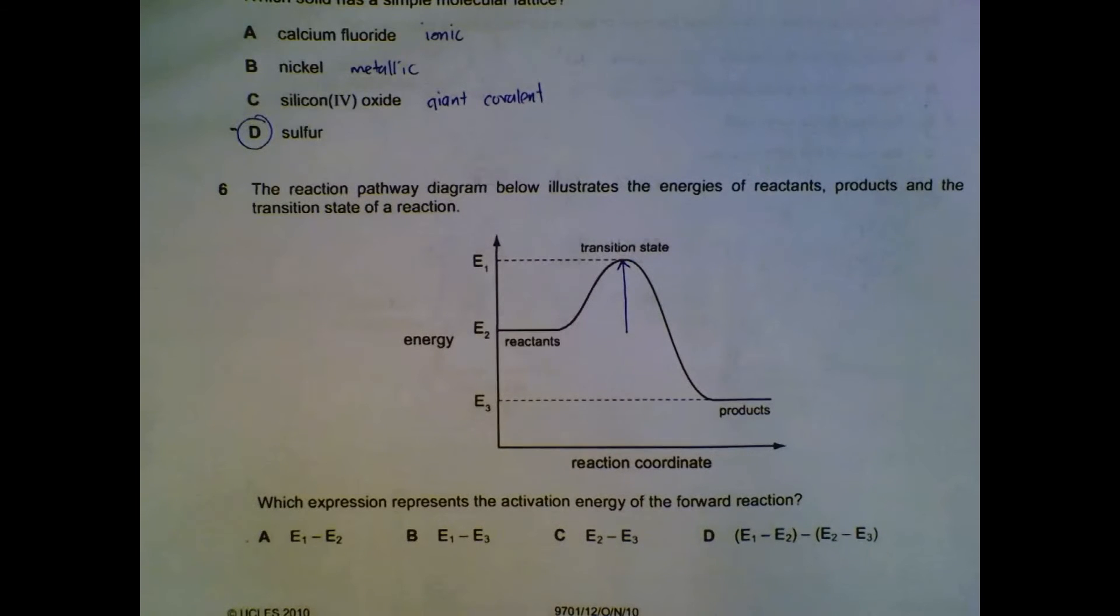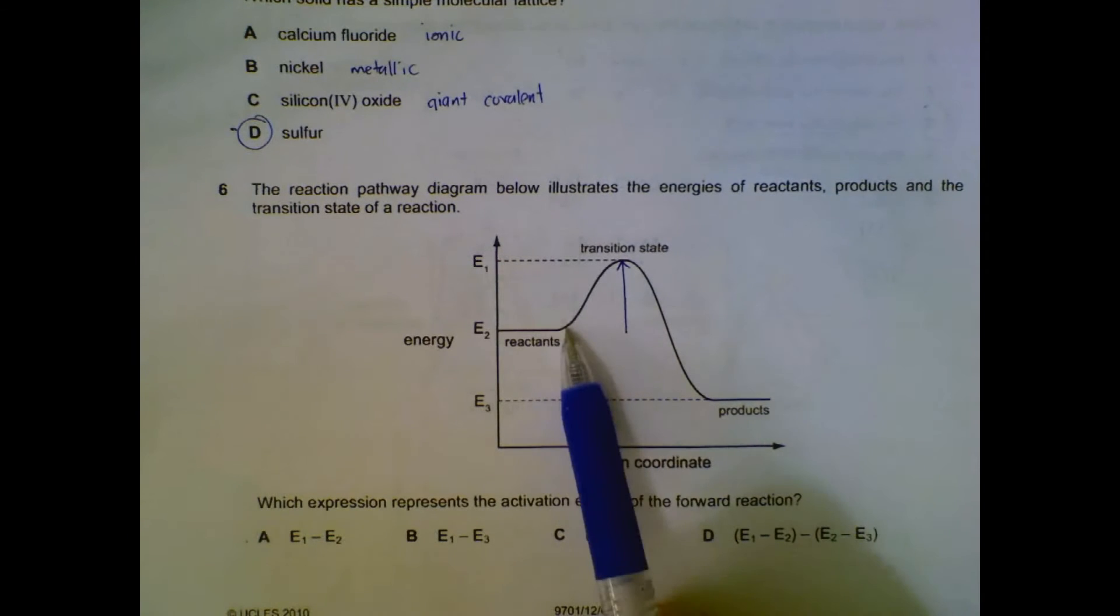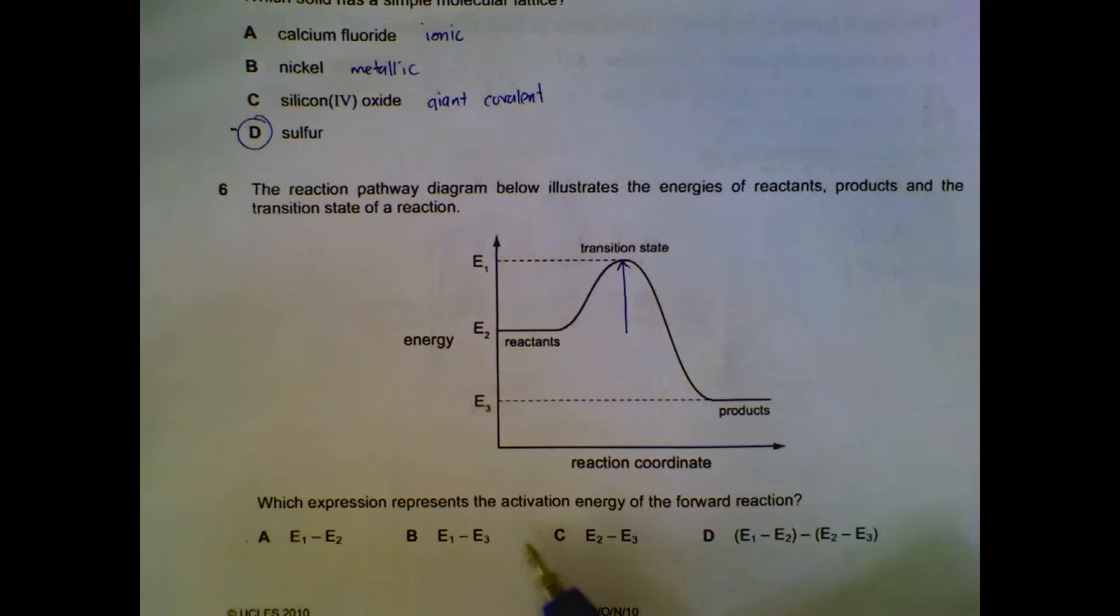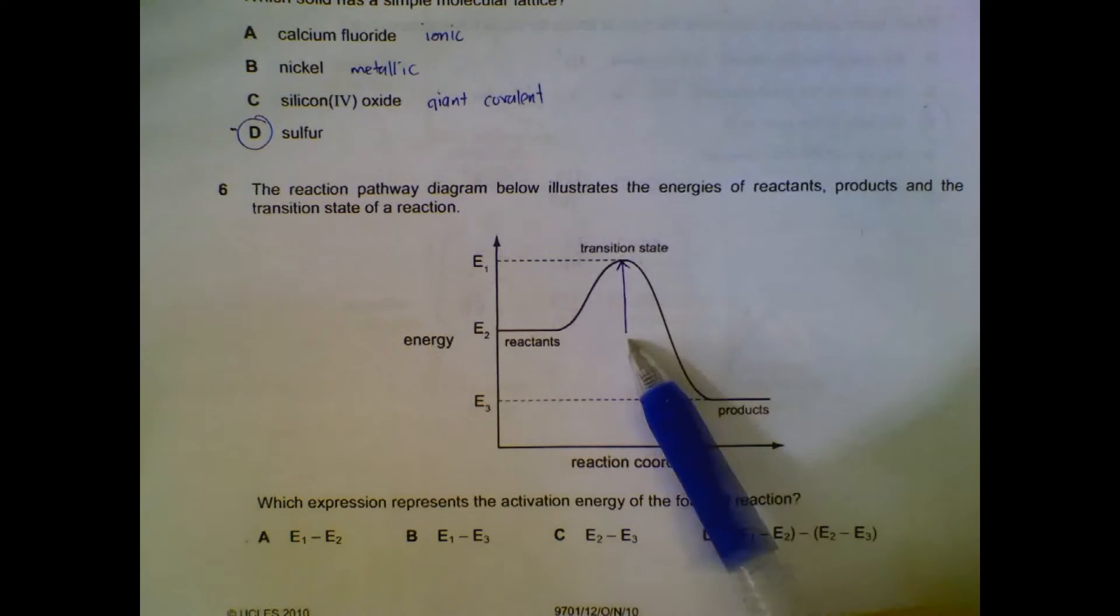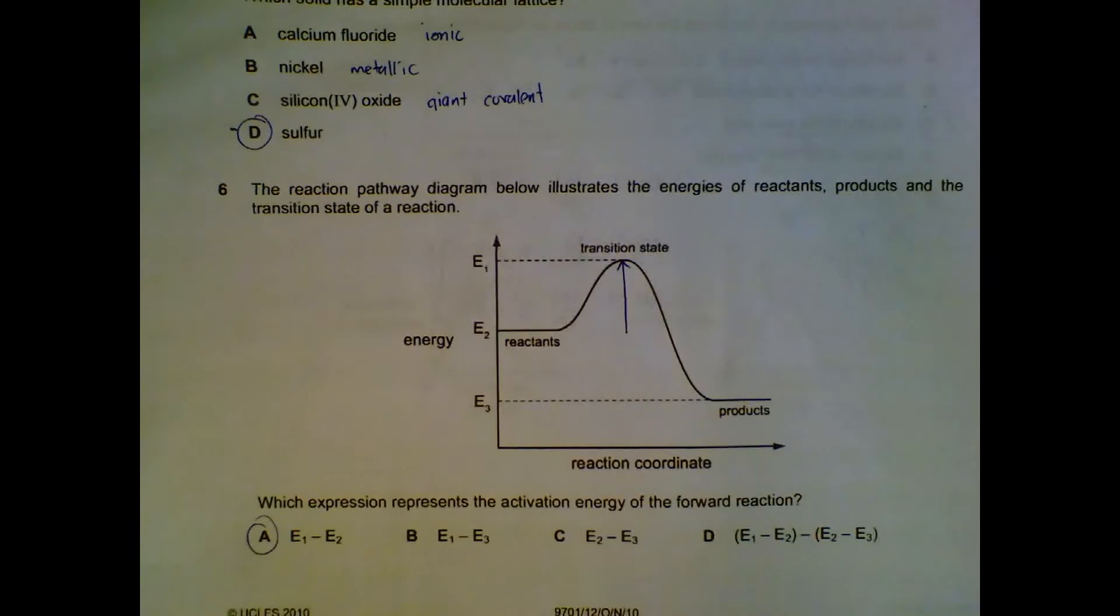Number six: activation energy of the forward reaction is represented by the difference between this level and this peak, so E1 minus E2 that will give us the amount for the activation energy.